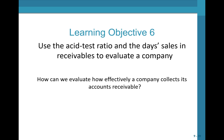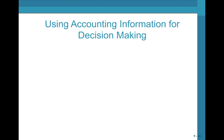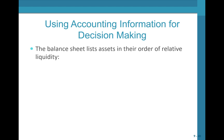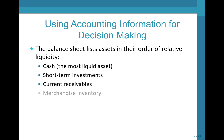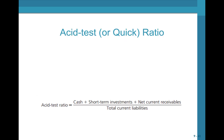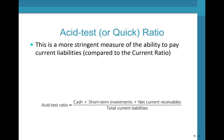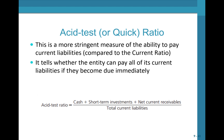Let's talk about evaluating how effectively a company collects its AR. The balance sheet lists assets in order of liquidity — cash first, then short-term investments, then current receivables, then merchandise inventory. One measure is the acid test ratio or quick ratio, which measures liquidity and is a more stringent measure of the ability to pay current liabilities compared to the current ratio. The current ratio is current assets divided by current liabilities.